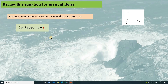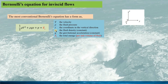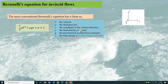The Bernoulli's equation for general inviscid flow is given as this. Here V is the fluid velocity, P is the fluid pressure, Z is the coordinate in the vertical direction — see this coordinate. Rho is the fluid density, here it is constant, G is the gravitational acceleration, and EV is the integral constant for the Bernoulli's equation, but it is actually the total mechanical energy of fluid per unit volume, so here I use EV for this total energy.